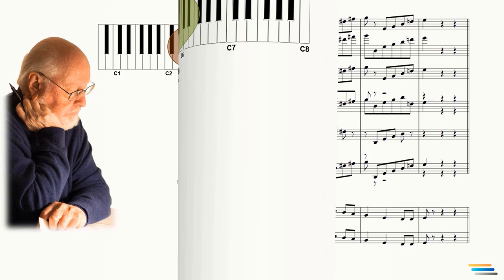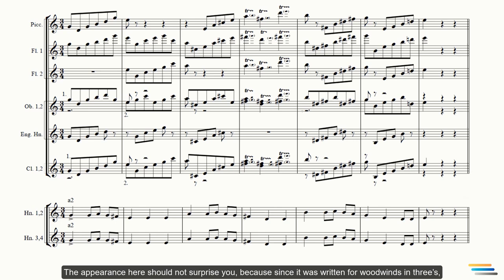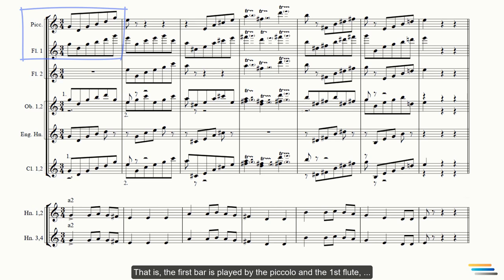The appearance here should not surprise you, because since it was written for woodwinds in threes, the orchestrator didn't write the same type of instrument at the same time, but rather in passing. That is, the first bar is played by the piccolo and the first flute, and the next bar is played by the first and second flutes. Or after the first oboe finishes playing, the second oboe immediately continues playing the next bar. But the question here is, can't all instruments play at the same time?